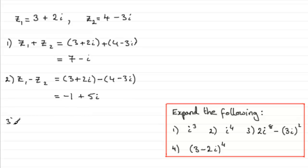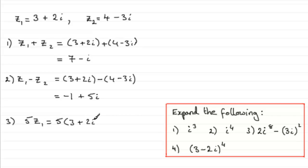In example 3, you can multiply a complex number by another number, a scalar quantity, like for instance 5 times Z1. 5 times Z1 would just be 5 multiplied by 3 plus 2i. What you do is multiply 5 times the real value, that's going to be 15, and 5 times the imaginary value, so it's going to be plus 10i. So the answer is 15 plus 10i.